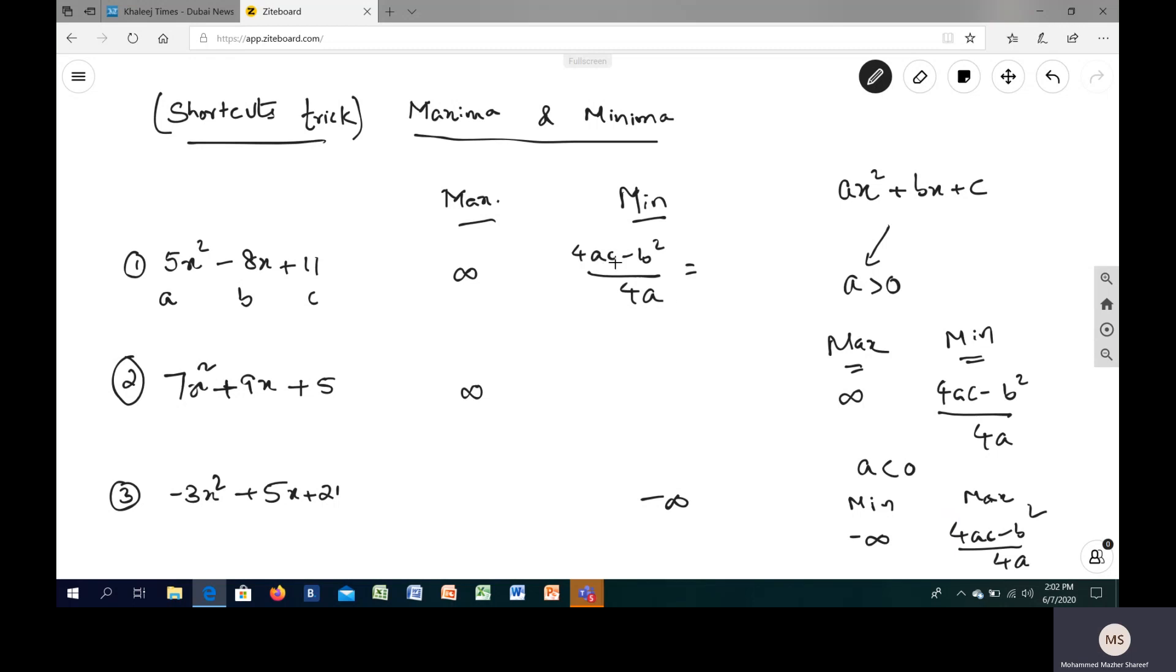4 times a and c, 20 into 11, 220 minus b squared, that is 64 divided by 4 times a, that is 20. Definitely this one, 220 minus 64 by 20 will give you the answer.